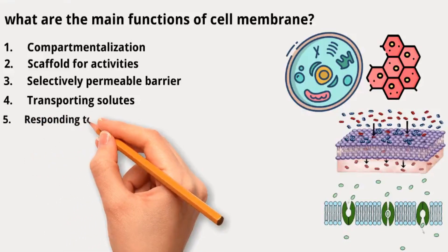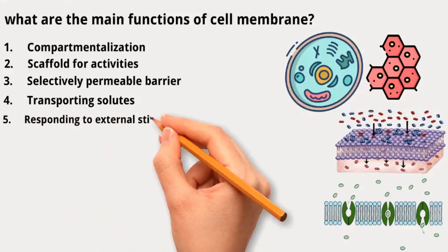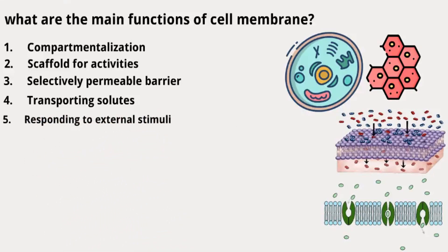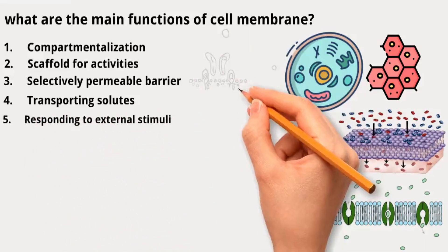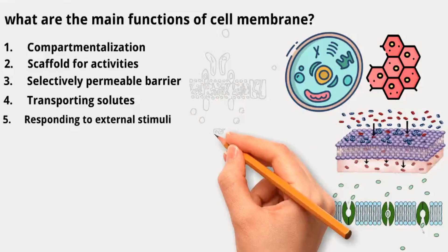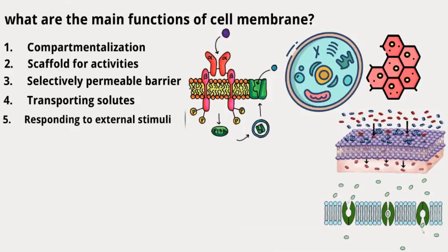Fifth, responding to external stimuli: membranes have receptors that react to external signals, allowing cells to recognize and respond to their environment. This can trigger various internal activities like making more glycogen, preparing for cell division, or even cell suicide.